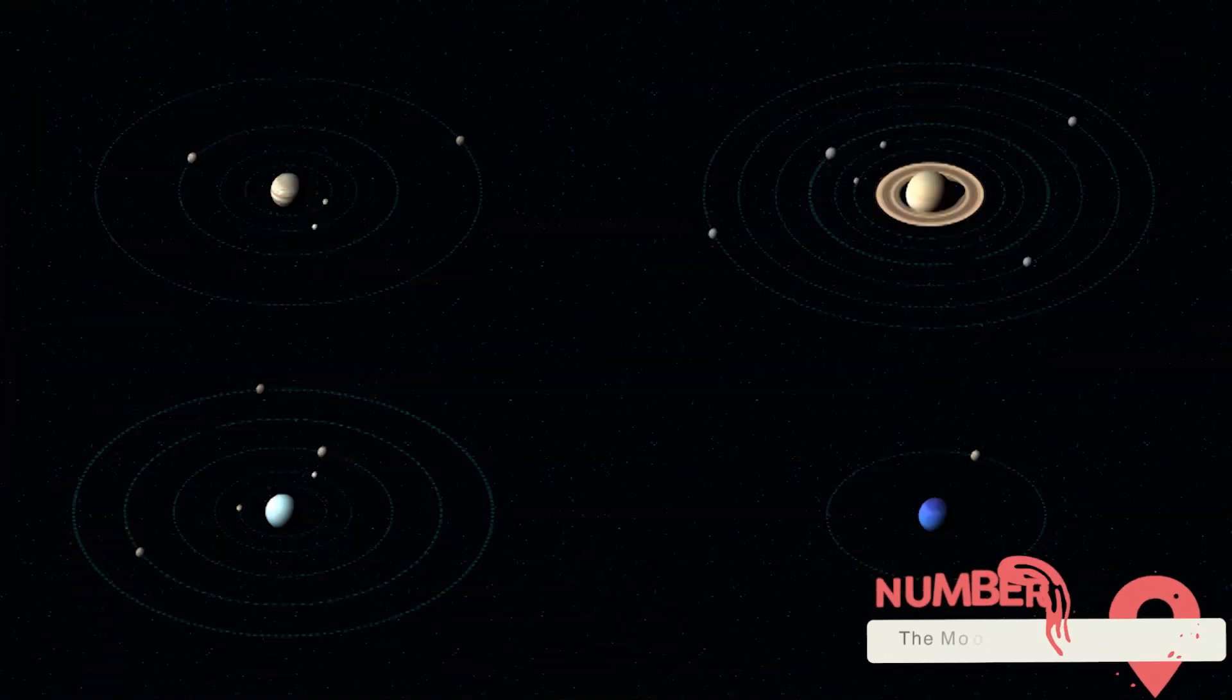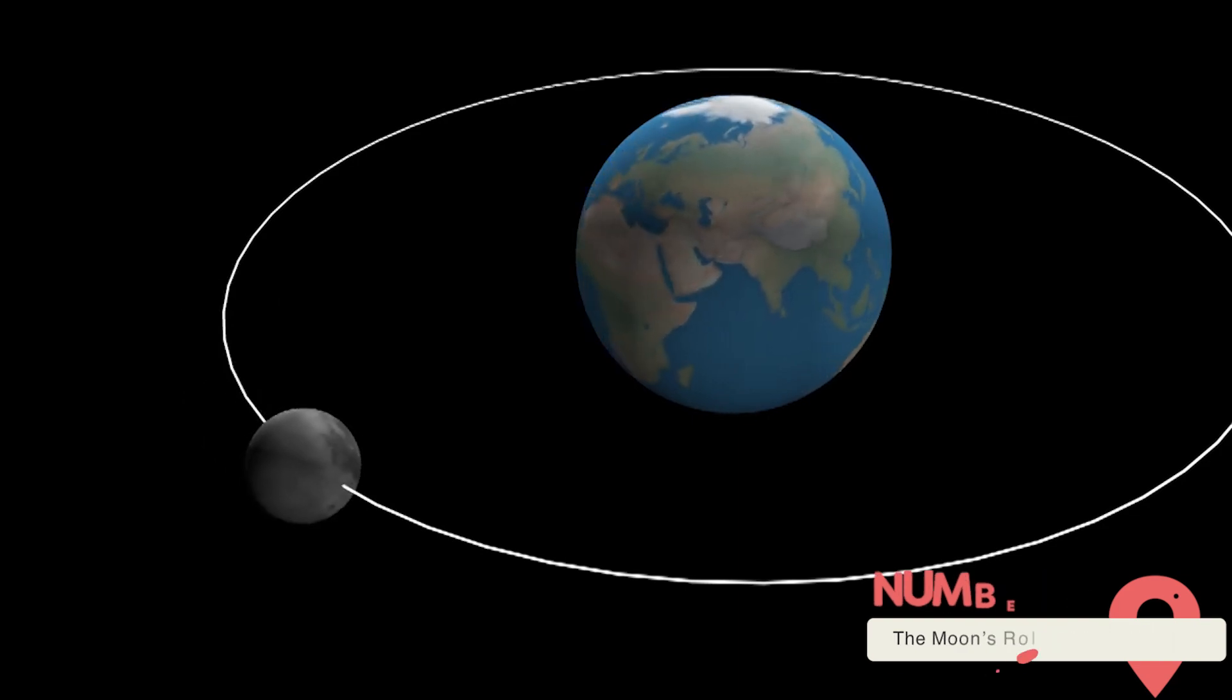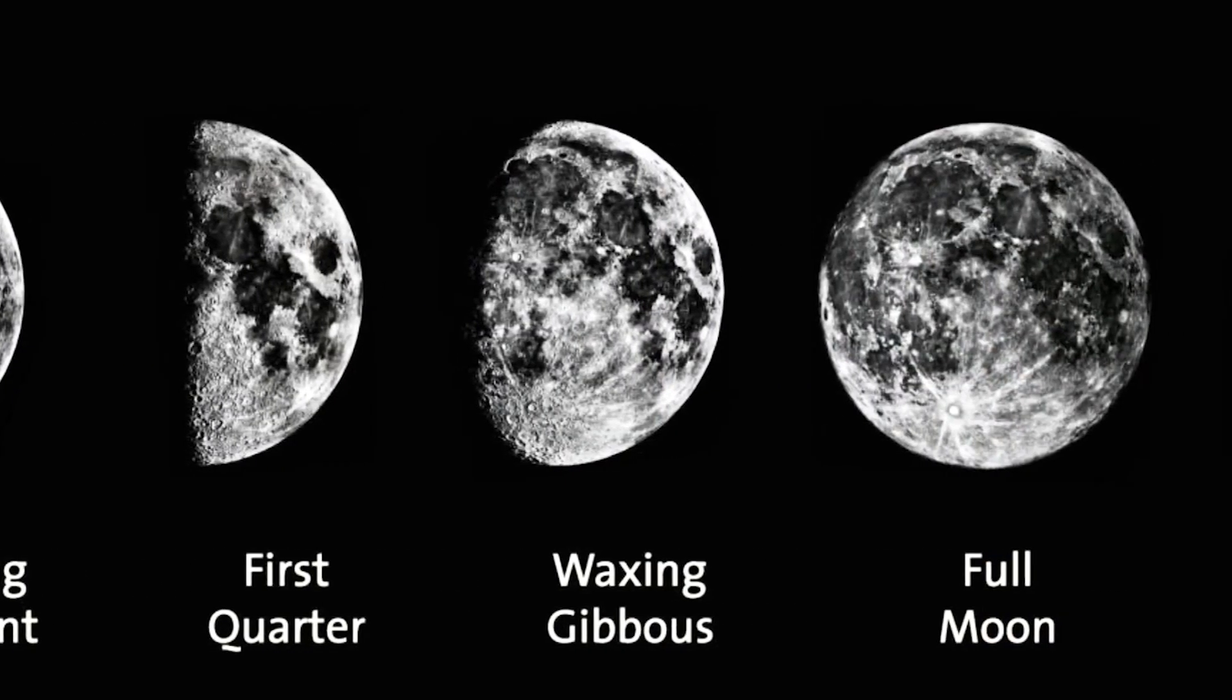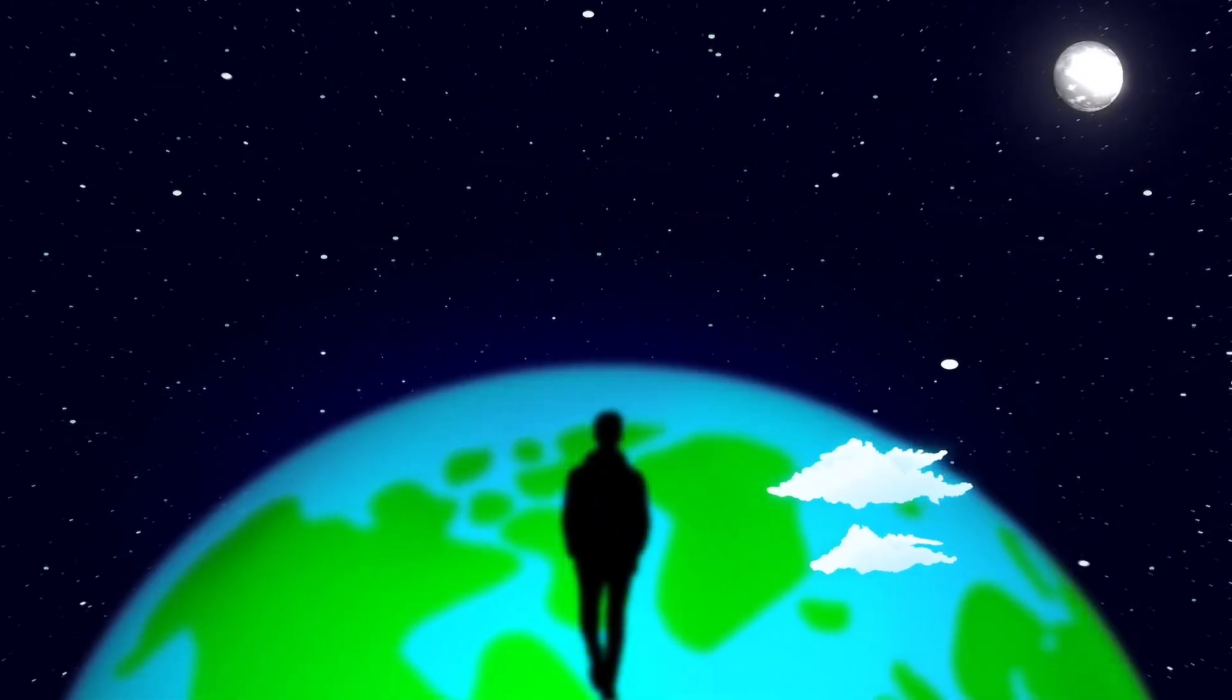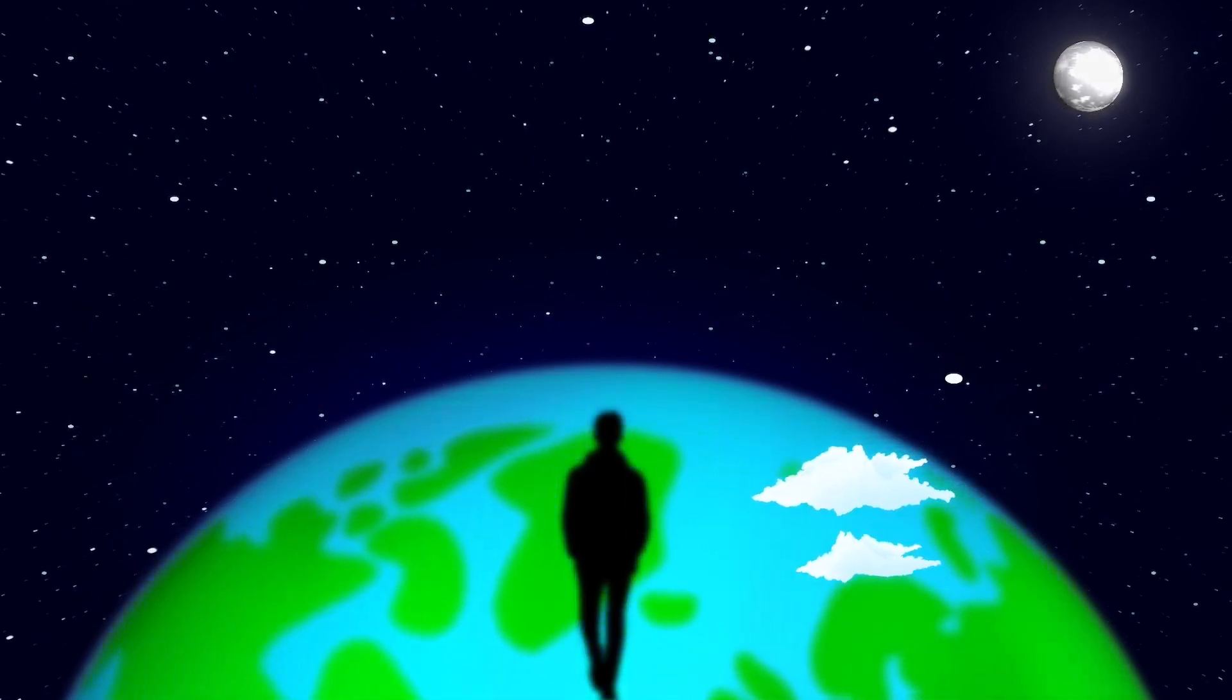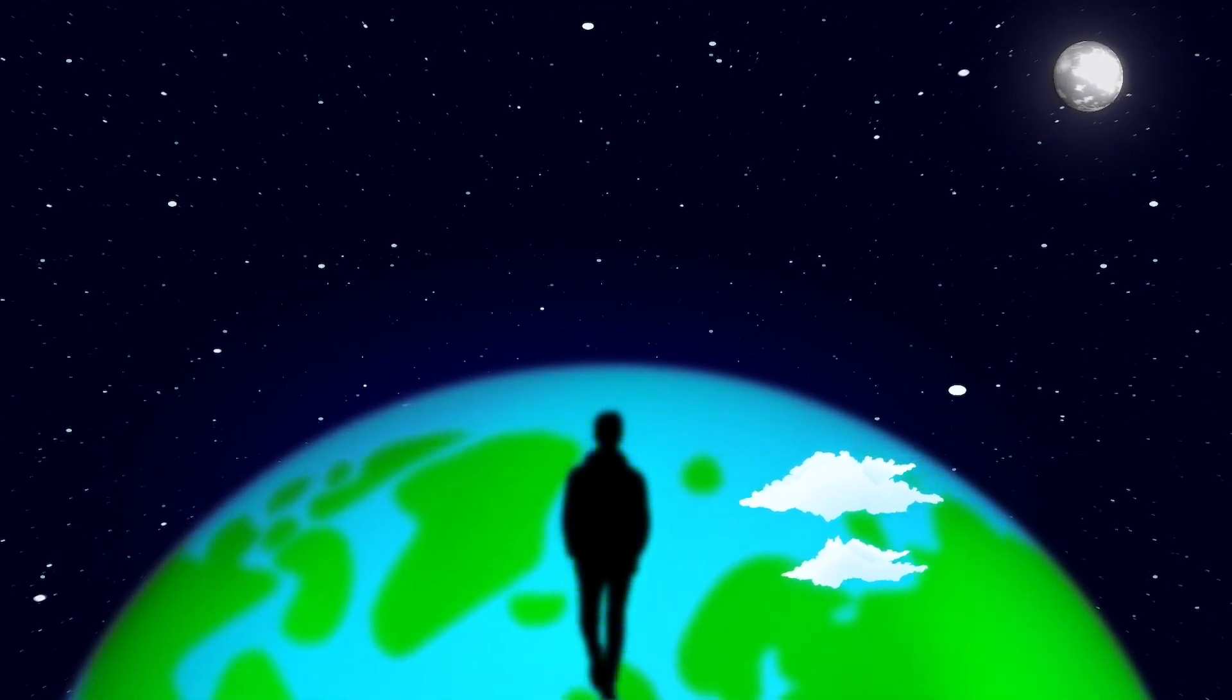The Moon's role in Earth's habitability. The Moon's importance to life on Earth extends beyond its more obvious effects on tides and seasons. Some scientists argue that the Moon has played a crucial role in making Earth habitable in the first place. One theory suggests that the giant impact that formed the Moon also delivered a significant portion of Earth's water. The Moon's formation may have also helped Earth retain its atmosphere by increasing the planet's mass and gravity.